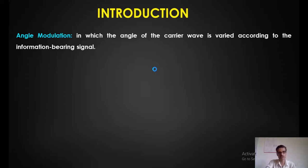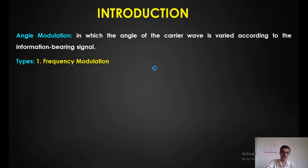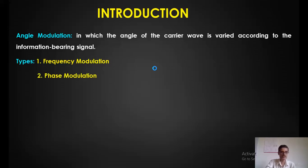There are two types of angle modulation. The first is frequency modulation, where we change the frequency of the carrier signal proportional to the amplitude variation. The second is phase modulation, where we change the phase of the carrier proportional to the amplitude of the message signal.